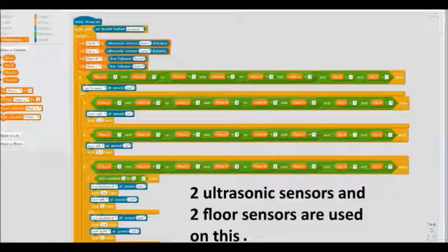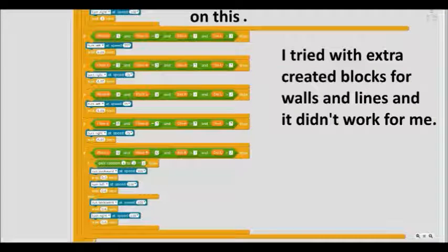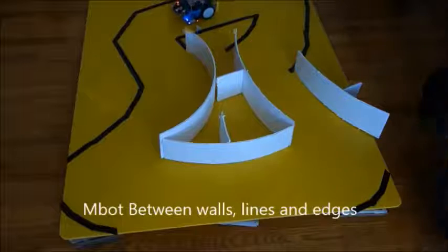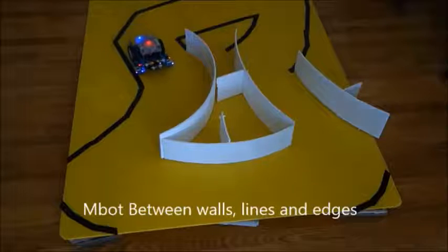Hello, we're back with another video of the M-Bot. This time we're preventing it from going past black lines or colliding with white walls or going off terrain. Unlike the last time where it was following the black lines, this time it's going in between two black lines.